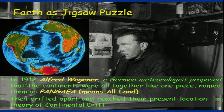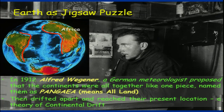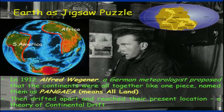What Wegener suggested was that initially all land mass existed together and then started drifting. These boundaries are indicative of matching boundaries, which was the first clue that they were probably together. In the beginning, all continents were together and that is what they termed Pangea.